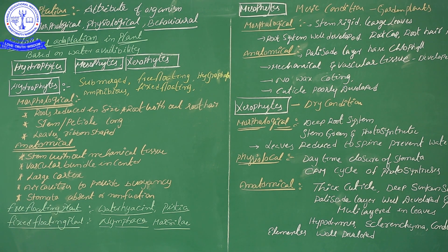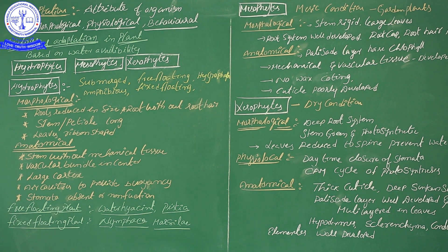Yesterday we discussed soil nature: oxalophytes grow in acidic soil, and halophytes grow in saline soil. Based on soil conditions, several types of plants are there. Here, basically, we are discussing hydrophytes, mesophytes, and xerophytes.